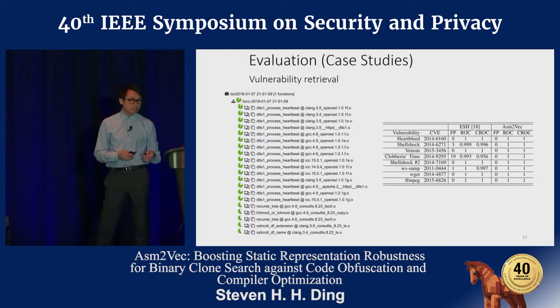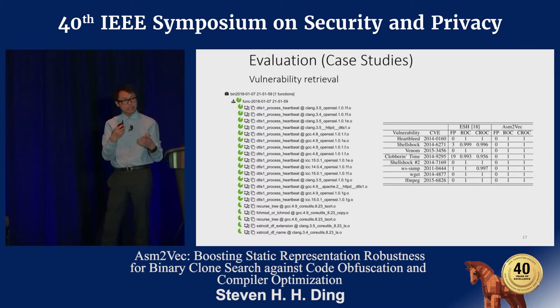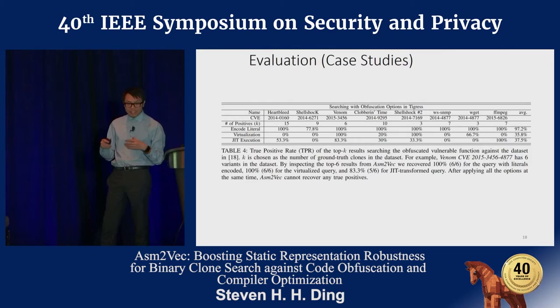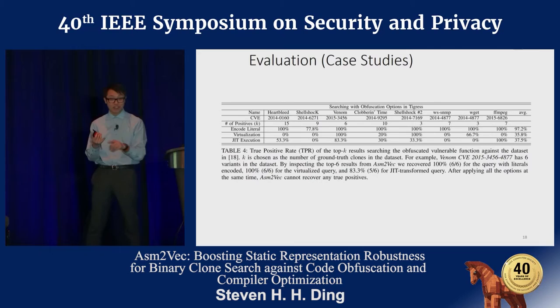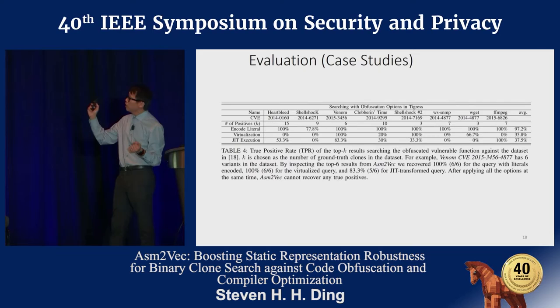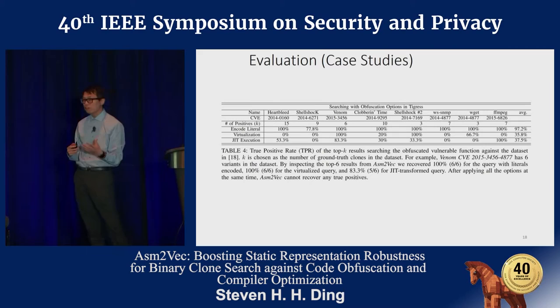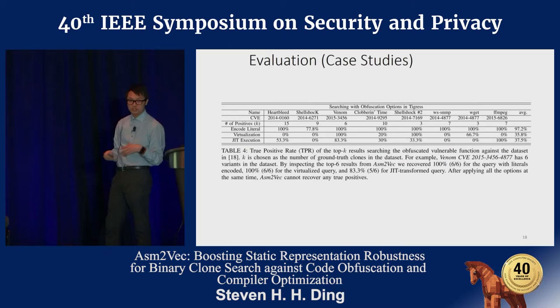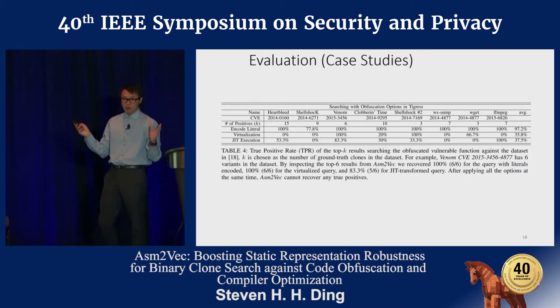We conducted case studies on vulnerability retrieval datasets - a repository of assembly functions where some are vulnerabilities and we try to retrieve them. Compared to ESH, which relies on dynamic analysis, our approach without any modification has zero false positives, and as a static approach it takes only a couple hundred milliseconds to get results. We also tested with the Tigress obfuscator, which uses virtualization and just-in-time execution. For individual obfuscation techniques our approach still recovers some vulnerabilities, but when all techniques are combined - obfuscation through virtualization and JIT execution - we cannot recover anything.